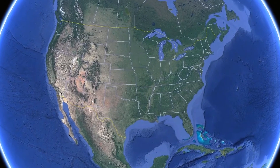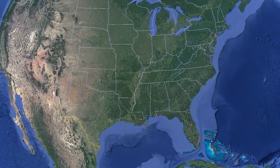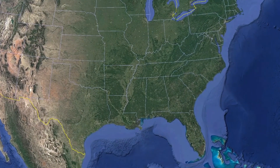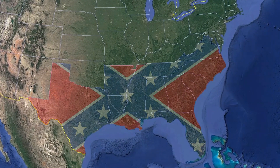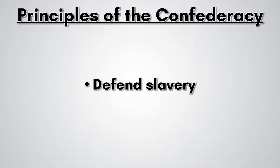The only secessionist movement to ever be somewhat successful in American history is the Confederate States of America. The CSA consisted of 11 U.S. states, all located in the southeast. The main reason the Confederacy was created was to defend slavery, which accounted for a huge portion of the southern economy.